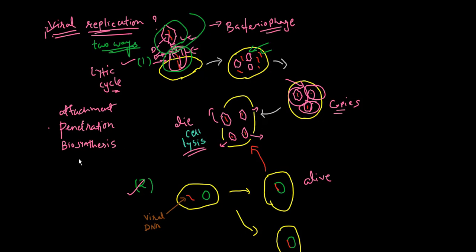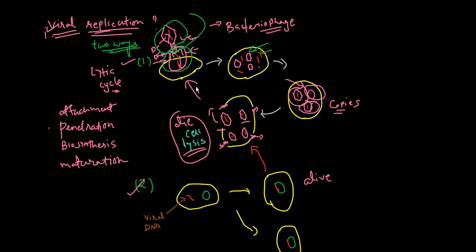Maturation then takes place, where the T-even bacteriophage DNA and capsid are assembled together to make virions. In the final stage, the bacteriophage enzyme lysozyme breaks apart the bacterial cell wall, lysing it, and the new virions escape. These new virions then infect neighboring cells and the cycle continues.